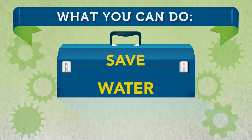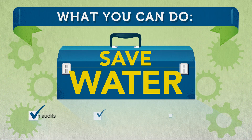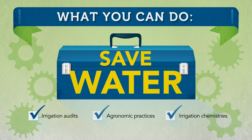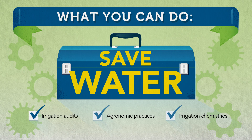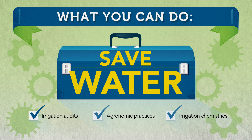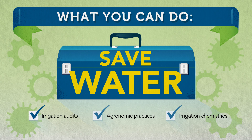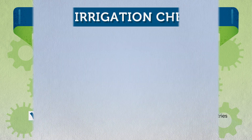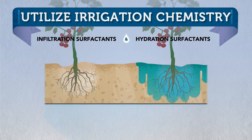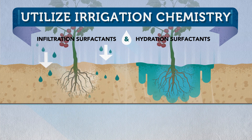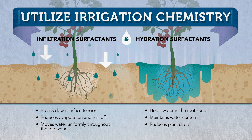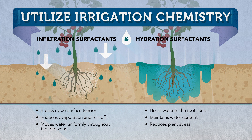Growers can save water, energy, and reduce costs by auditing irrigation systems, following good agronomic practices, and now by using new, innovative irrigation chemistries. Irrigation chemistries come in two basic types: infiltration surfactants and hydration surfactants.